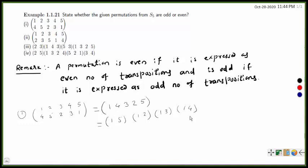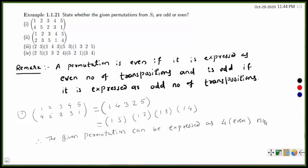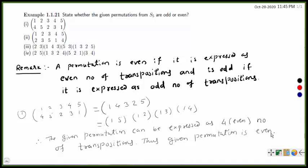How many transpositions are there in this expression? 1, 2, 3, 4 — so this given permutation can be expressed as 4, that is an even number of transpositions. Therefore, the given permutation is an even permutation.